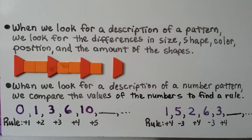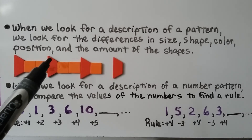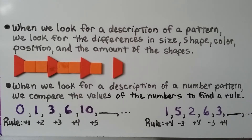When looking for a description of a pattern, we examine differences in size, shape, color, position, and the amount of shapes. For example: trapezoid, two squares, trapezoid, two squares, trapezoid — the missing piece should be a square. When looking for a description of a number pattern, we compare the values of the numbers to find a rule.